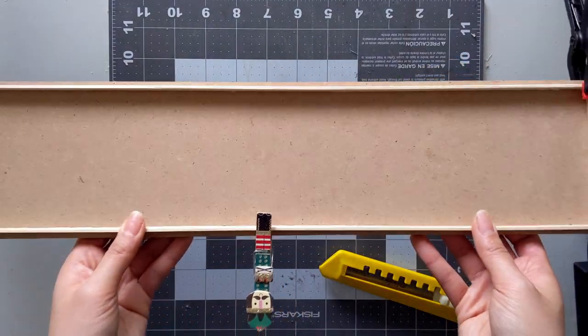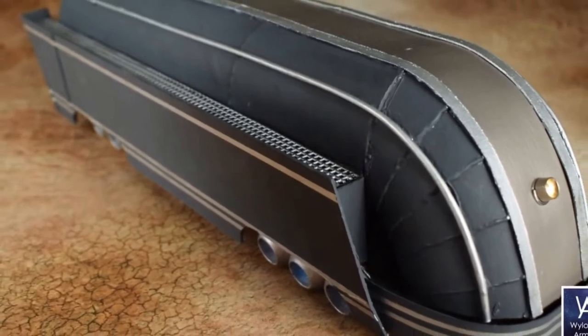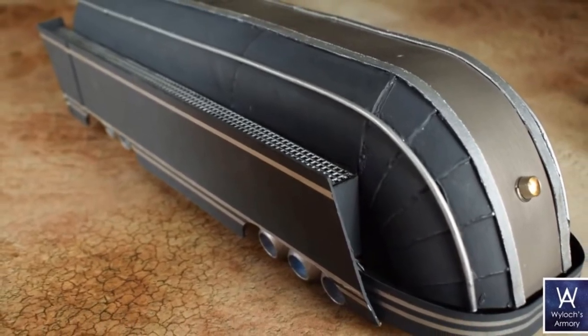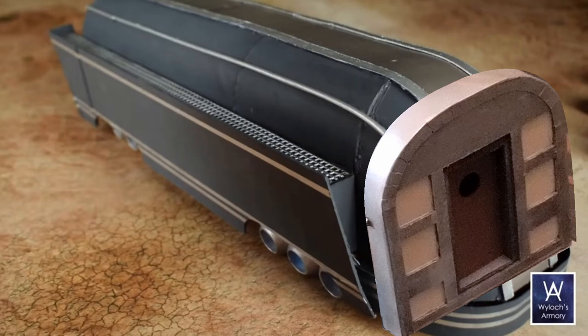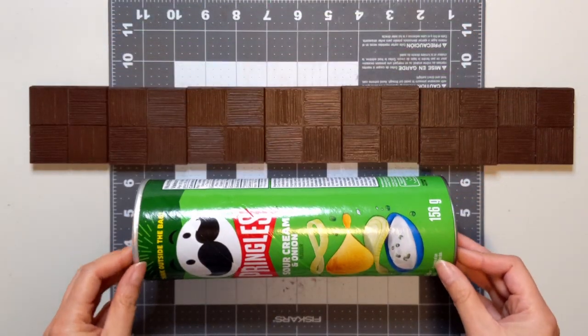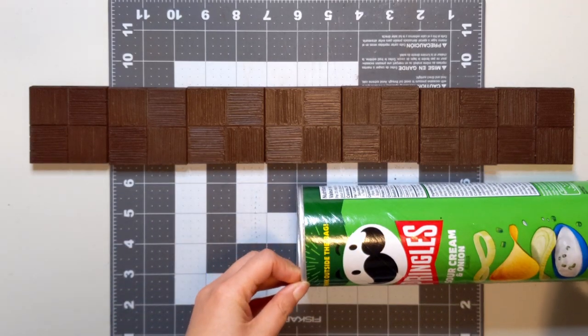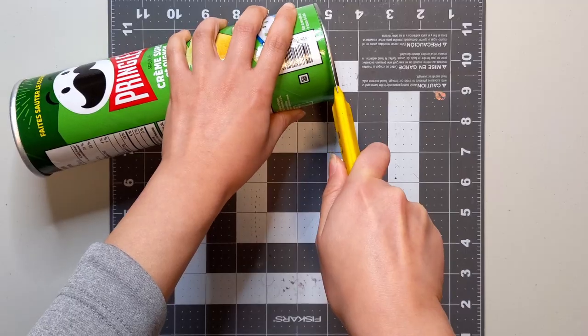While that's clamped and drying, we're going to move on to the outside of the train car. I'm largely basing this on Wylock's video and design, except I'm making the caboose since my party was racing to get onto the back of the train. I loved Wylock's idea of using a Pringles can to create that rounded roof and one can will be the perfect length for 14 of these one and a quarter inch squares.